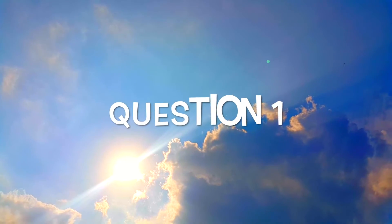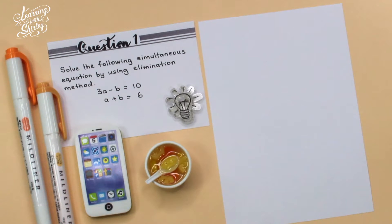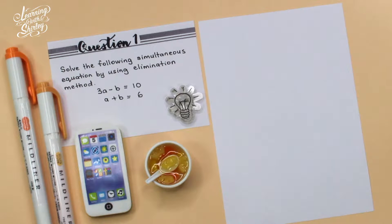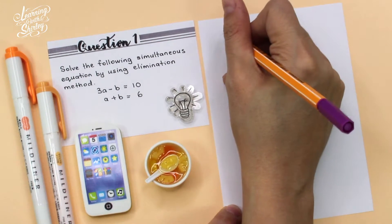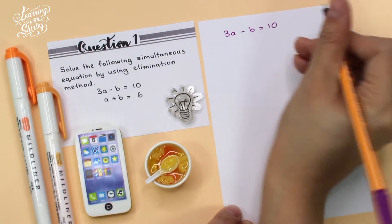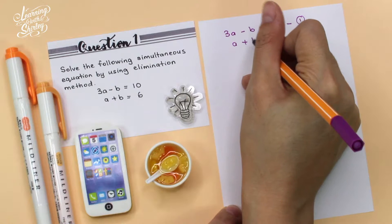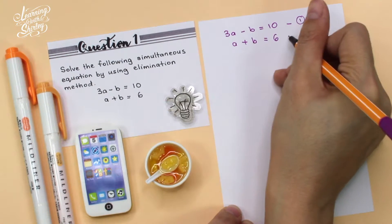Let's take a look at the first question. For question 1, solve the following simultaneous equation by using the elimination method. So given two equations here, which are 3a minus b equals 10 and a plus b equals 6. I'm going to label these as equation 1 and equation 2.